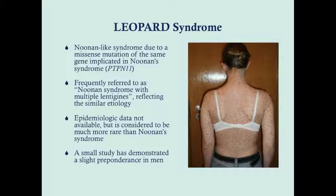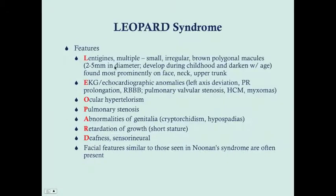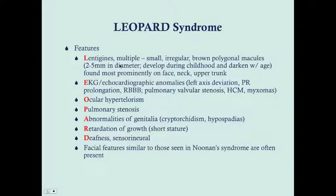The most prominent symptom here in this patient is these lentigines. Lentigines are small irregular brown polygonal macules, and they tend to develop as the patient gets older. So babies may be born with Leopard Syndrome, but you're not going to notice the lentigines. The lentigines are a necessary feature in order to diagnose Leopard Syndrome — if they don't have lentigines, they don't have Leopard Syndrome. They typically start to come on during late childhood, maybe even earlier, but they really begin to become prominent as the child transitions into adulthood.